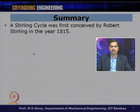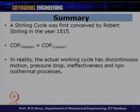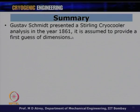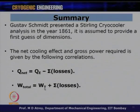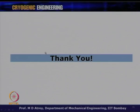In summary: the Stirling cycle was first conceived by Robert Stirling in 1815; COP_Stirling = COP_Carnot for the ideal cycle; actual cycles deviate due to discontinuous motion, pressure drop, ineffectiveness, and non-isothermal processes; alpha, beta, and gamma are the three cryocooler types; Schmidt's analysis (1861) provides a first-guess design tool; and net cooling effect and gross power input are given by Q_net = Qe − Σlosses and W_total = Wt + Σlosses. A self-assessment is provided — please attempt those questions.